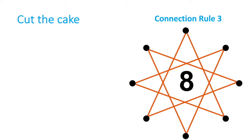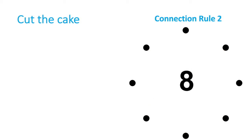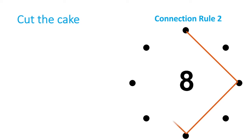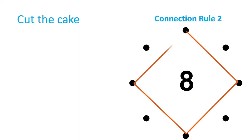That worked well with eight people and a connection rule of three — everyone got to touch the ball. But it turns out that wasn't always the case. For example, with a team of eight using a connection rule of two, look what happens: I throw to the second person, second person, second person again — and all of a sudden, one person misses out, as you can see in that last pass.